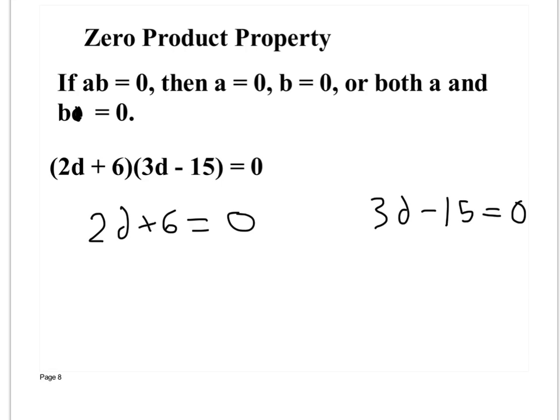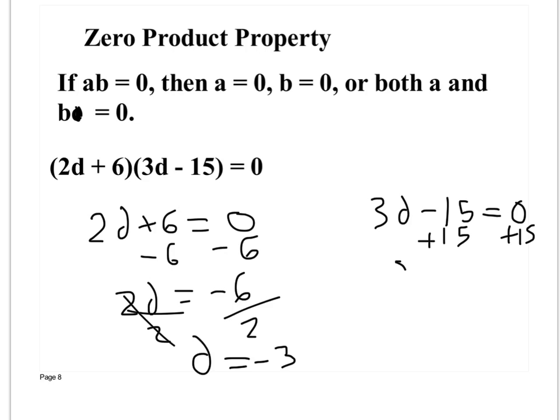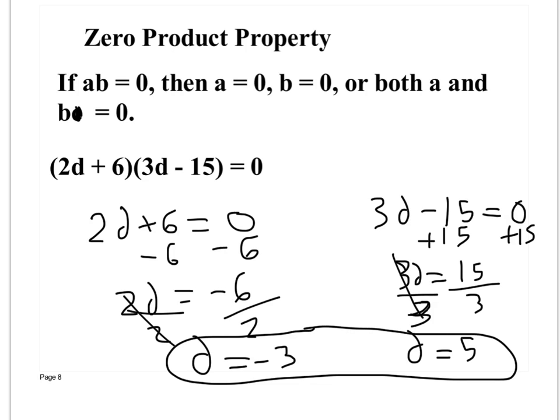So figuring out what d is to make this a true statement. So I subtract 6 from both sides. 2d is equal to -6. I divide by 2. d is -3 for the first one. Here, I add 15. I divide by 3. And d could equal 5. So my two answers, they call this the roots, because it makes this equation true, is -3 and 5. That's my two answers.